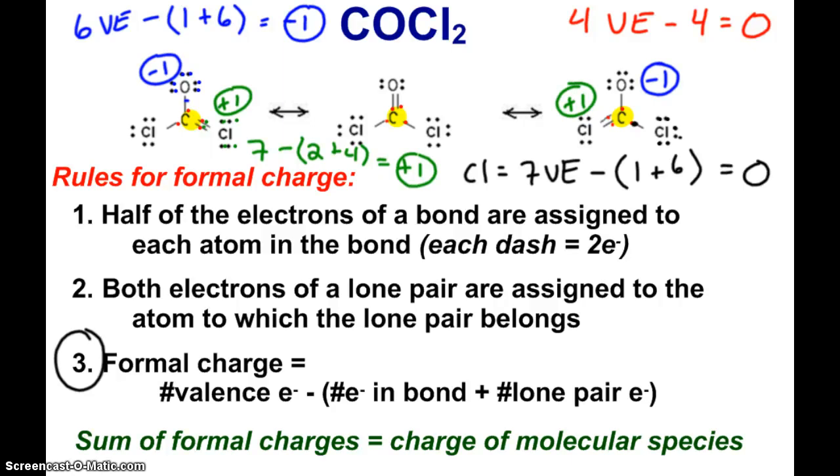So again, the carbons and the single bonded chlorines both have formal charges of zero. And so you can see in that middle molecule, no formal charges are written. Oh sorry, there's also a double bonded oxygen. Double bonded oxygen has six valence electrons minus two electrons in the bond and four lone pair electrons. That's also zero. The double bonded chlorines and the single bonded oxygen have the formal charges.